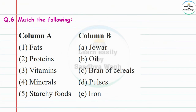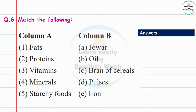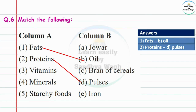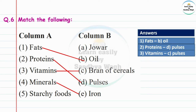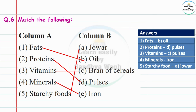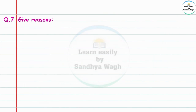Question 6: Match the following. Column A has: oil, bran of cereals, pulses, iron, jowar. Answers — Fats: oil. Proteins: pulses. Vitamins: bran of cereals. Minerals: iron. Starchy food: jowar.